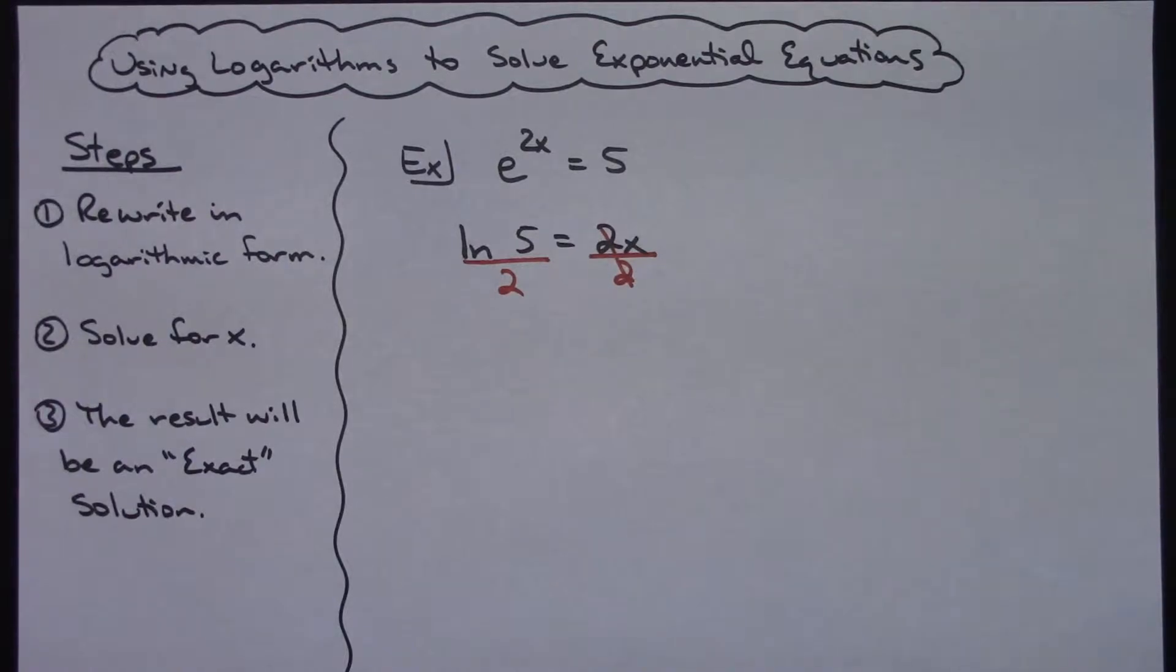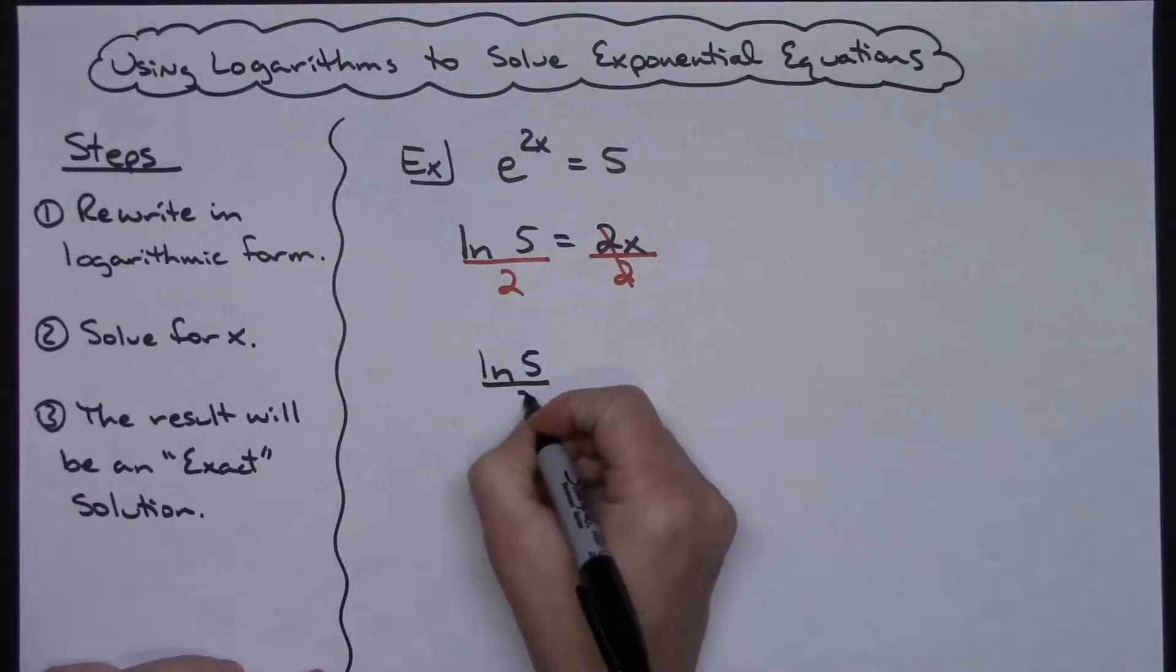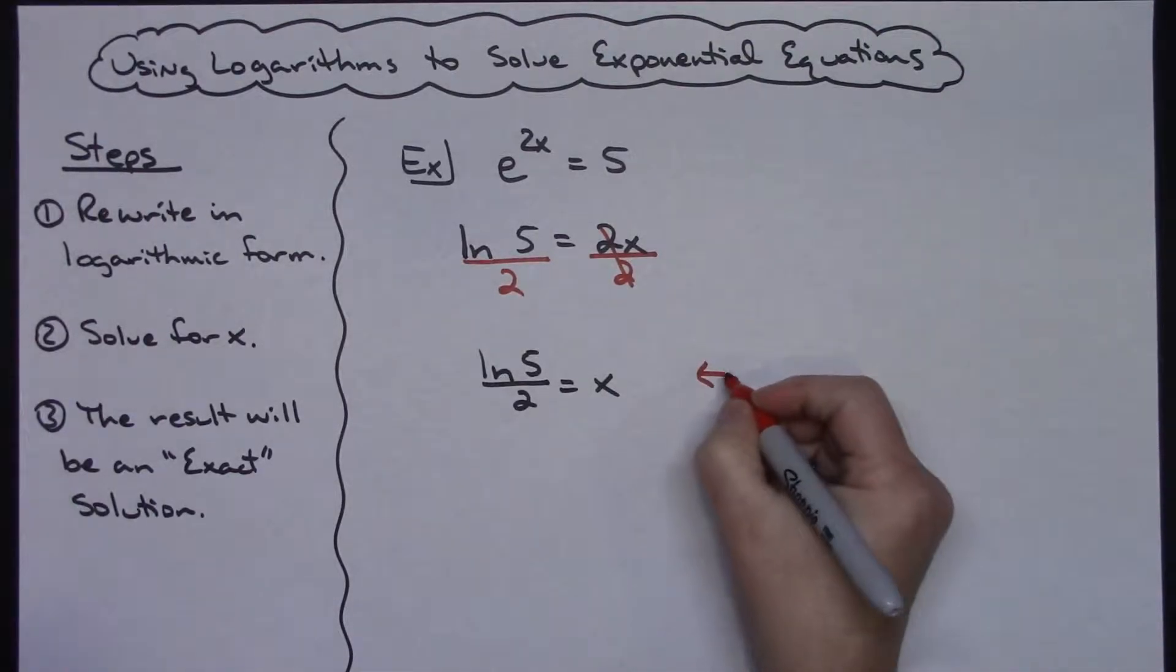I'm going to have the natural log of 5 over 2, so natural log of 5 over 2 and that equals x. Now that right there is the exact solution.